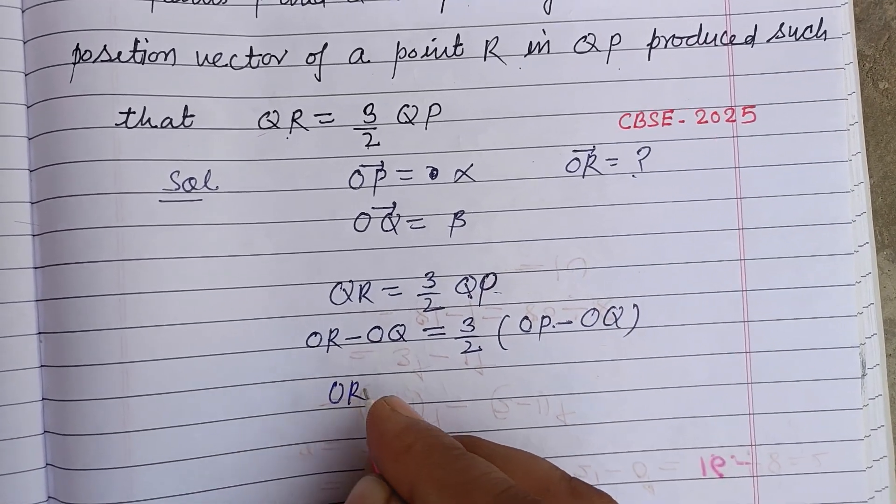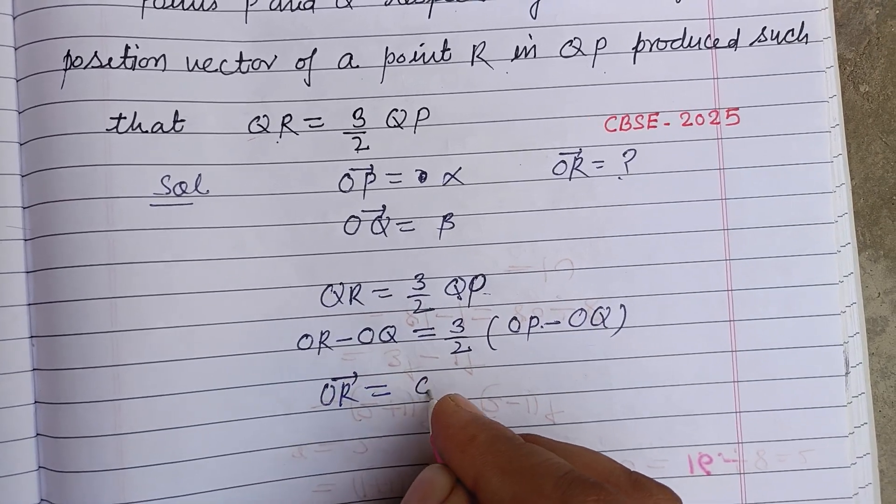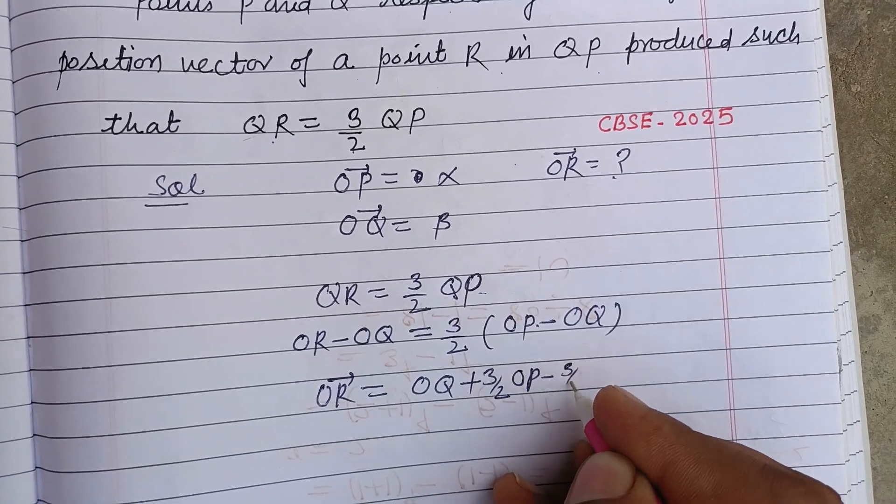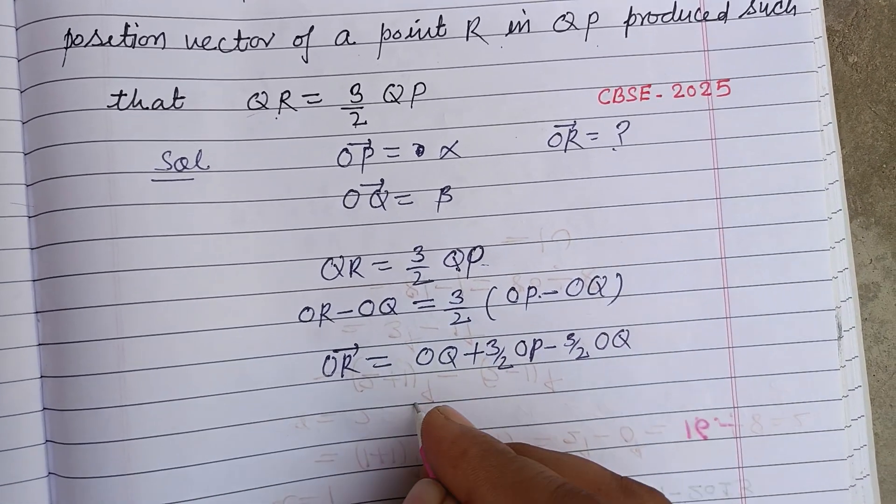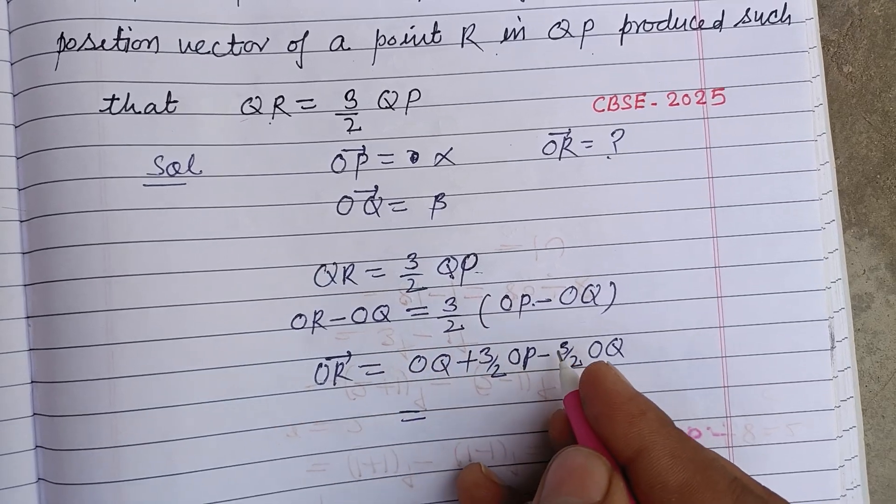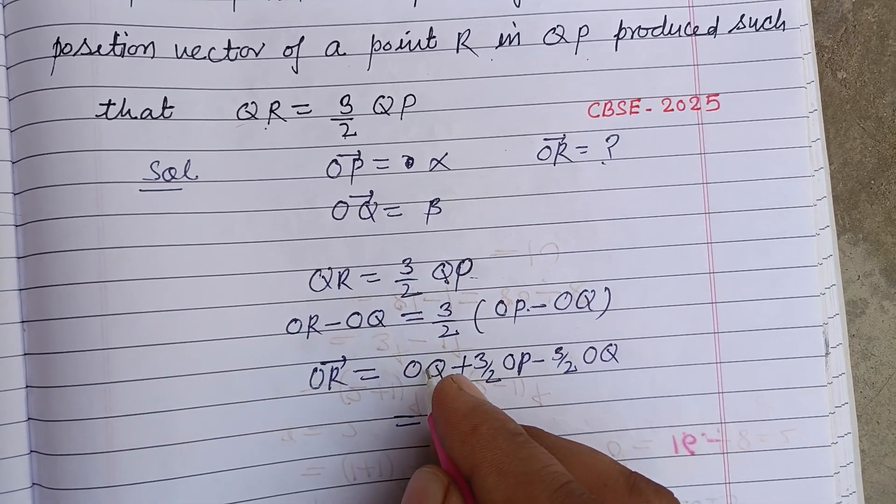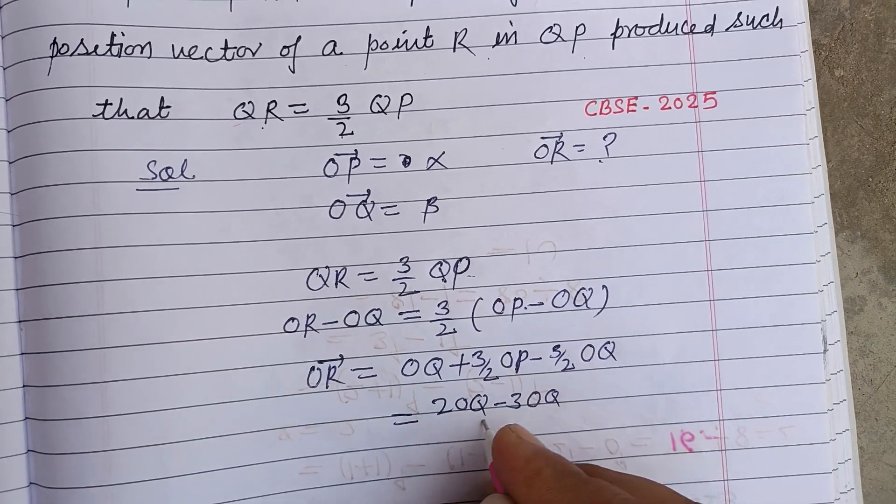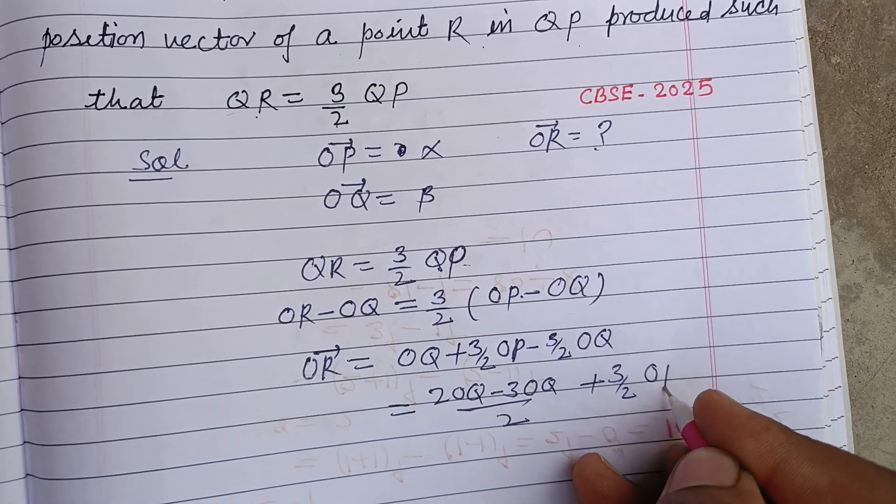Now OR equals OQ plus three by two OP minus three by two OQ. This becomes 2OQ minus 3OQ upon 2, plus three by two OP.